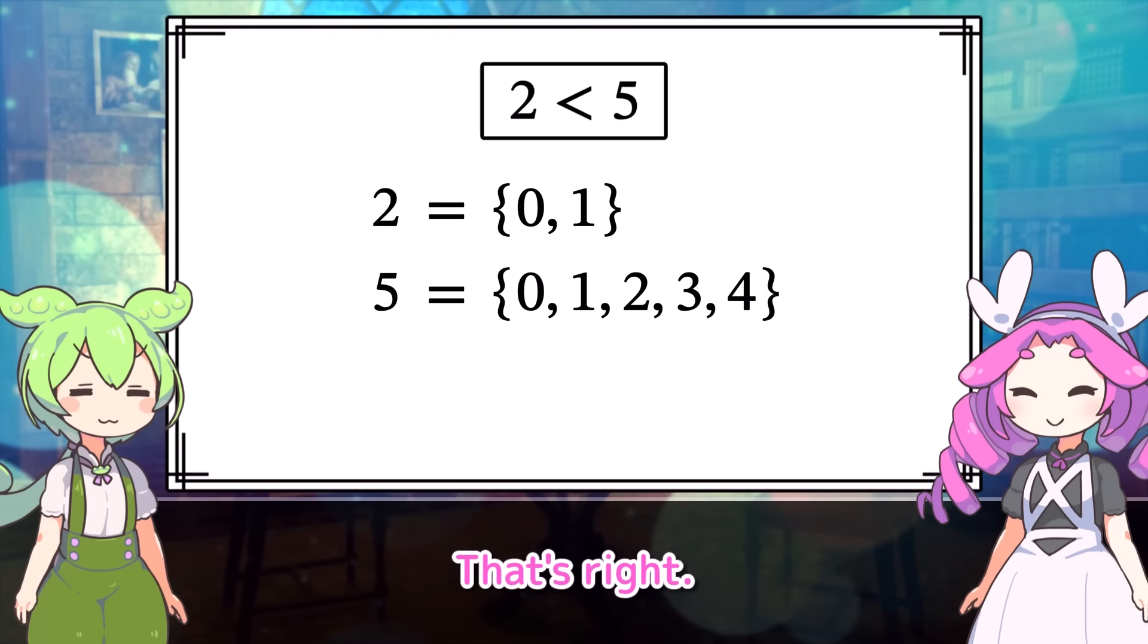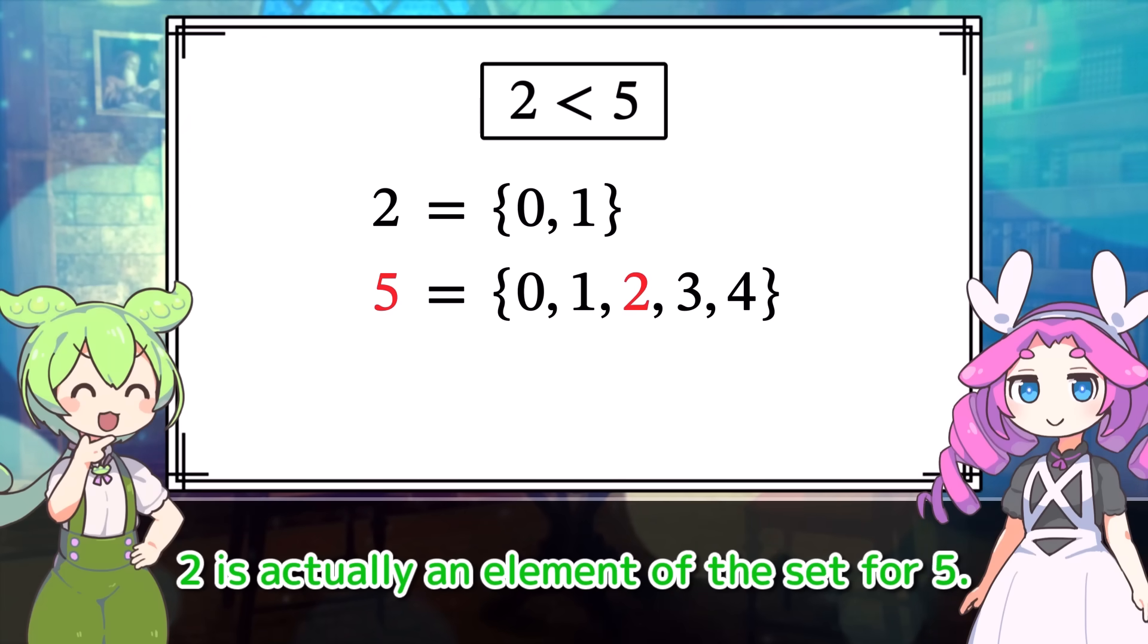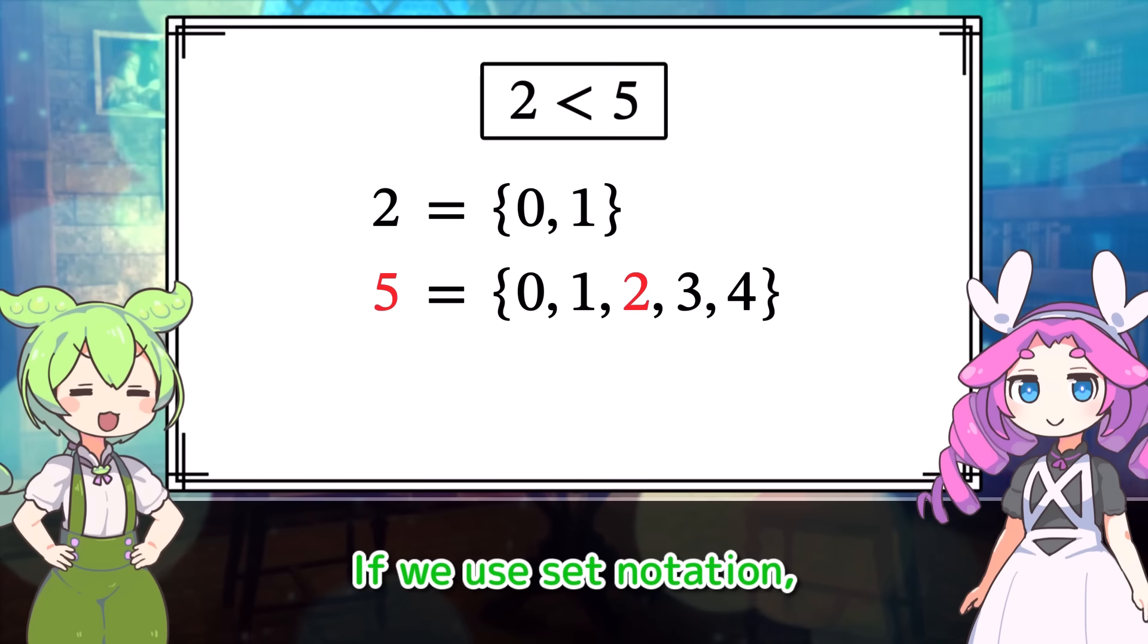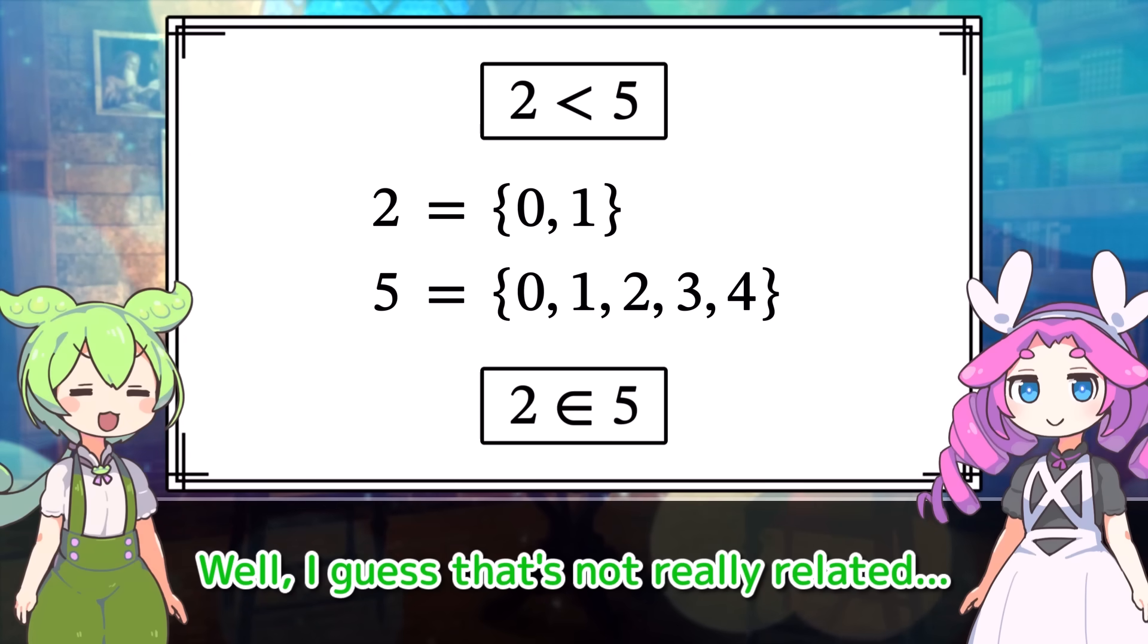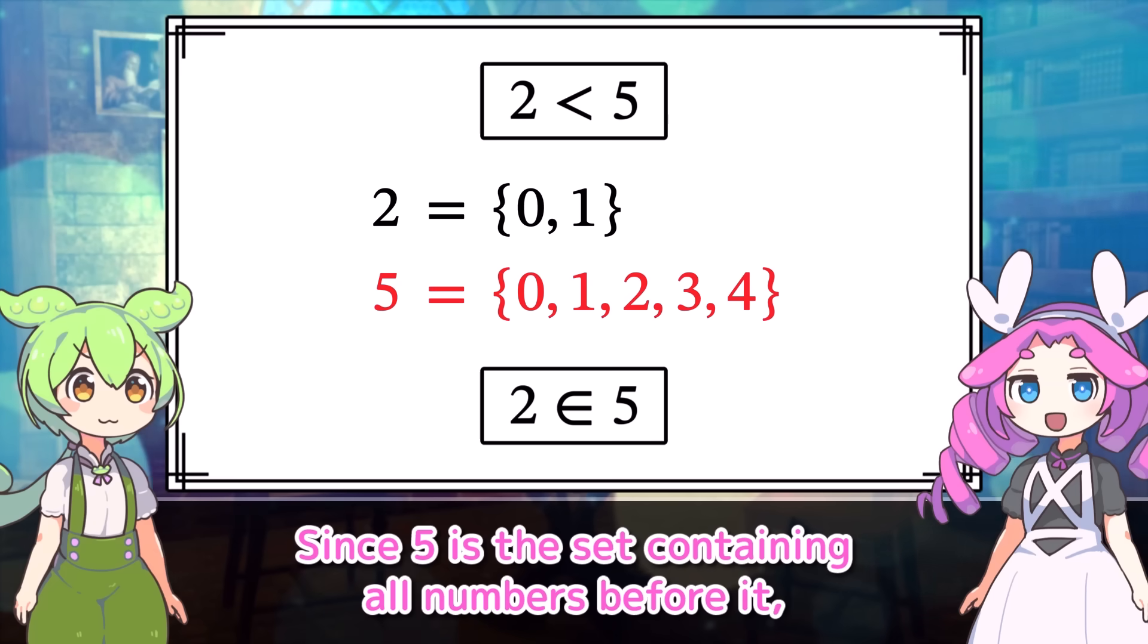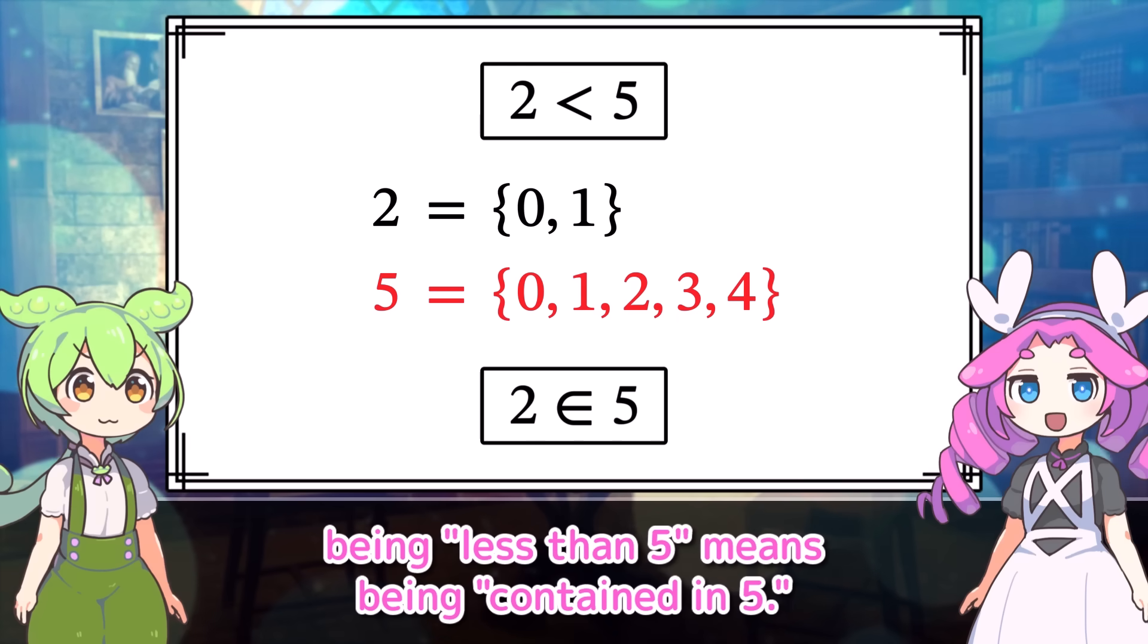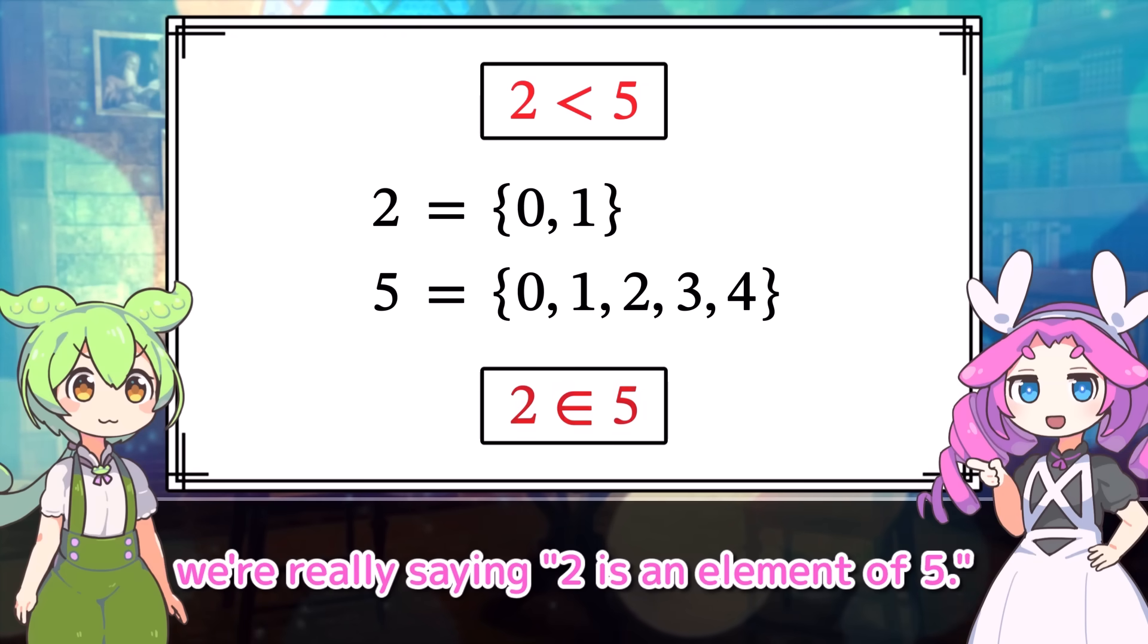That's right. Hey, have you noticed something? Hmm, not really. Oh, wait. Two is actually an element of the set for five. If we use set notation, we can write it like this. Well, I guess that's not really related. That's actually an important point. Since five is the set containing all numbers before it, being less than five means being contained in five. So when we say two is less than five, we're really saying two is an element of five.